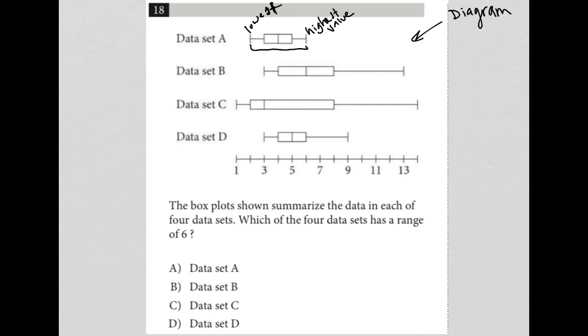So all we need to do is utilize our actual diagram here on your page and figure out where are the low value and the high value for each data set, and what is the distance between the low and the high, and which one has a distance of six?